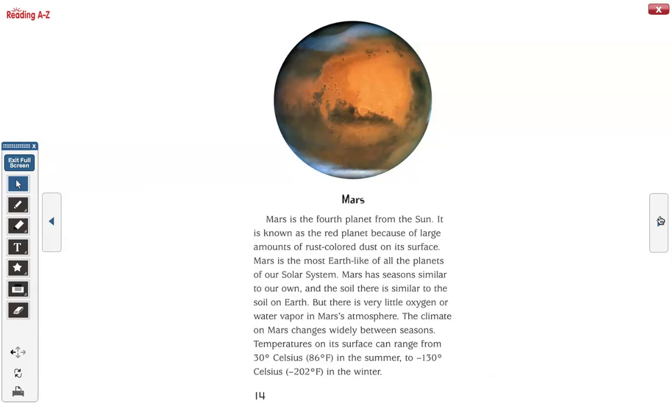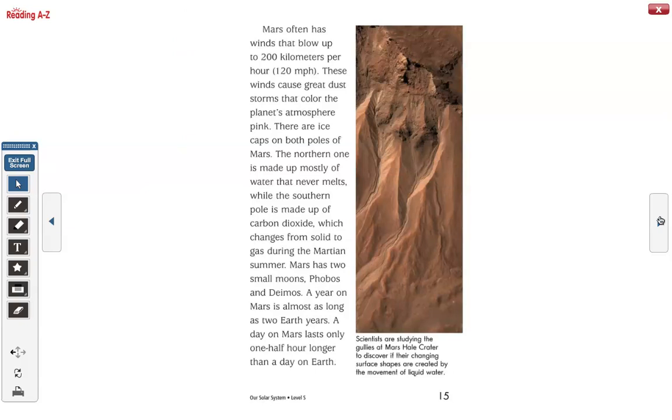The climate on Mars changes widely between seasons. Temperatures on its surface can range from 30 degrees Celsius or 86 degrees Fahrenheit in the summer to minus 130 degrees Celsius and minus 202 degrees Fahrenheit in the winter. Mars often has winds that blow up to 200 kilometers per hour. That's 120 miles per hour. These winds cause great dust storms that color the planet's atmosphere pink. There are ice caps on both poles of Mars. The northern one is made up mostly of water that never melts, while the southern pole is made up of carbon dioxide, which changes from solid to gas during the Martian summer.